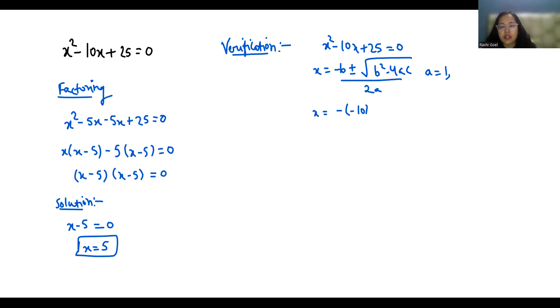And c = 25. So x = 10 ± √(100 - 100)/2 = 10 ± √0/2 = 10/2.